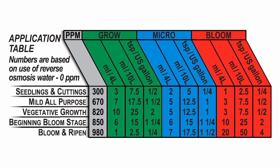If you look to the far left you'll see there are five rows: seedlings and cuttings, mild all-purpose, vegetative growth, beginning bloom stage, and the bloom and ripen stage. Given the stage of growth of your plants, you'll just be referring to that row for your mixing instructions.